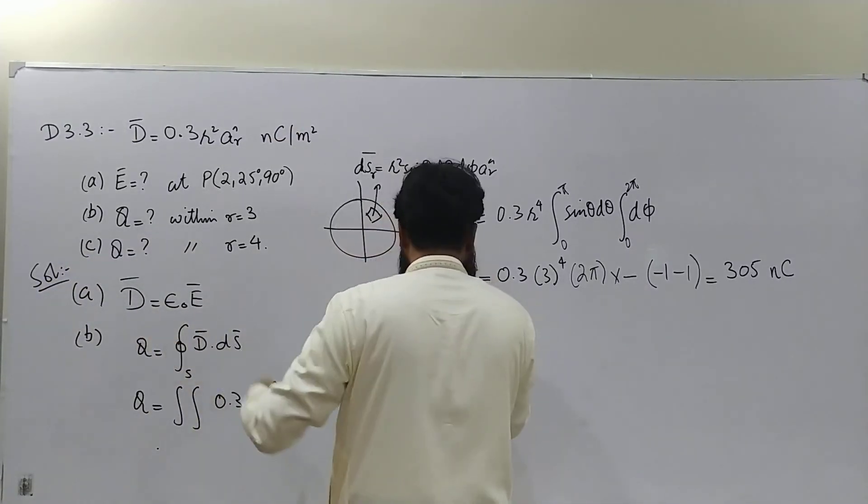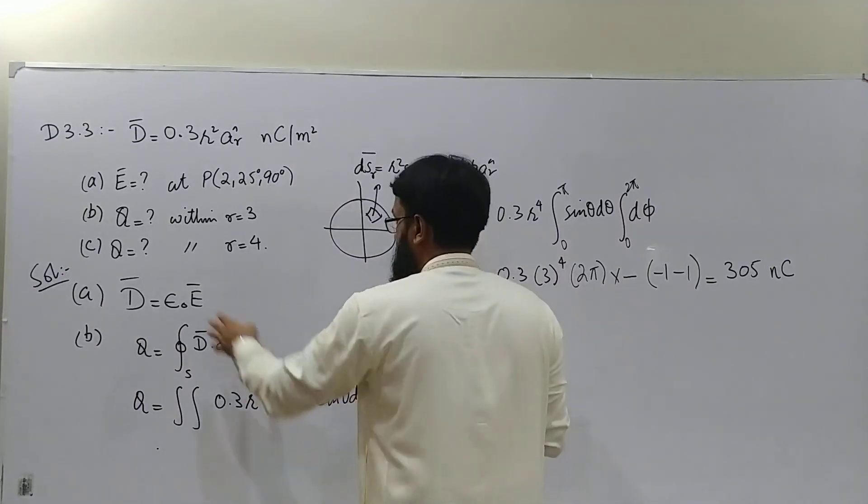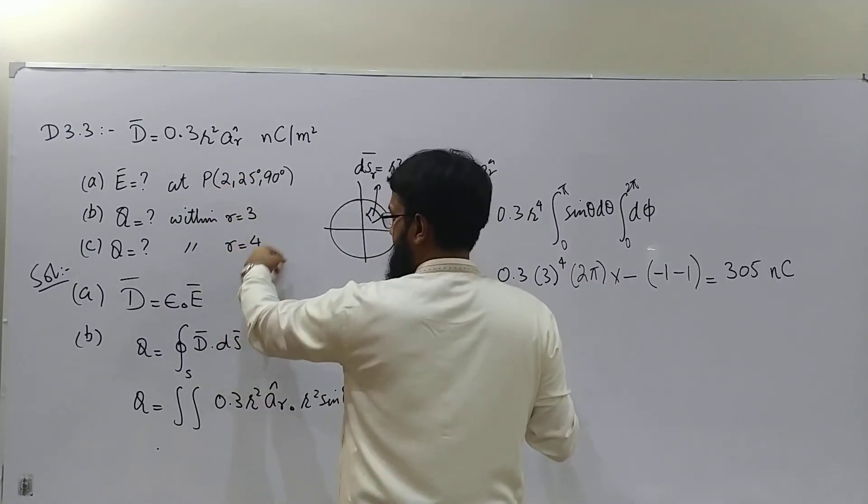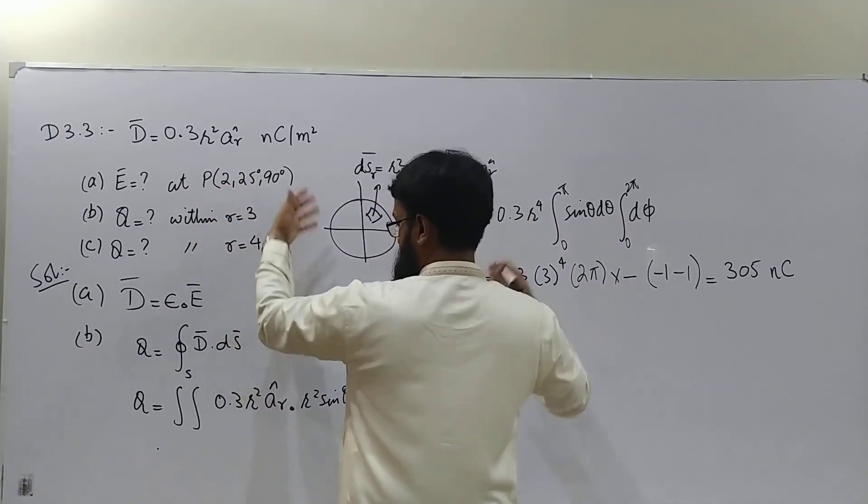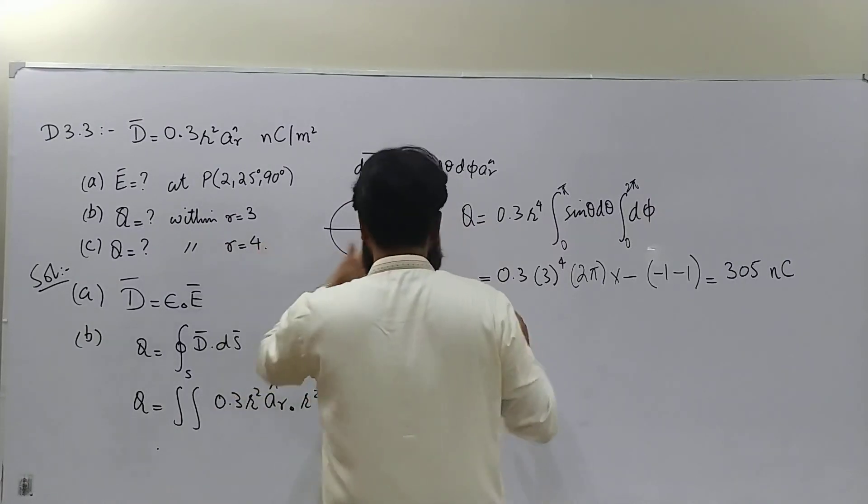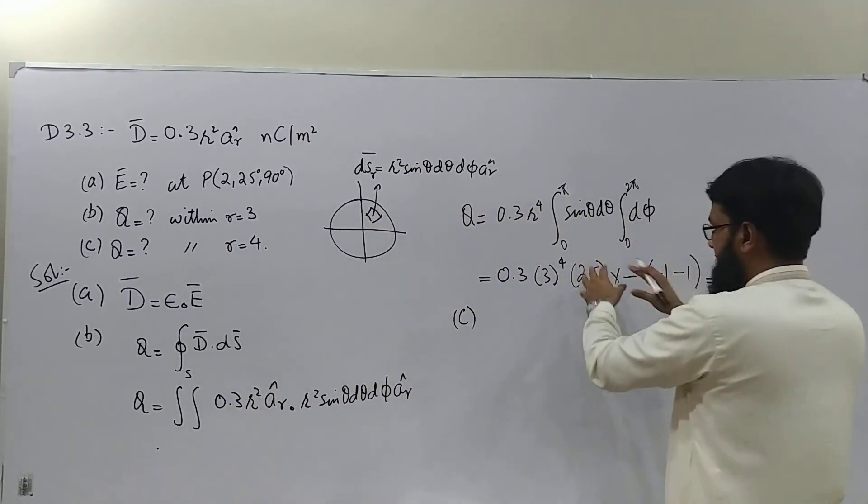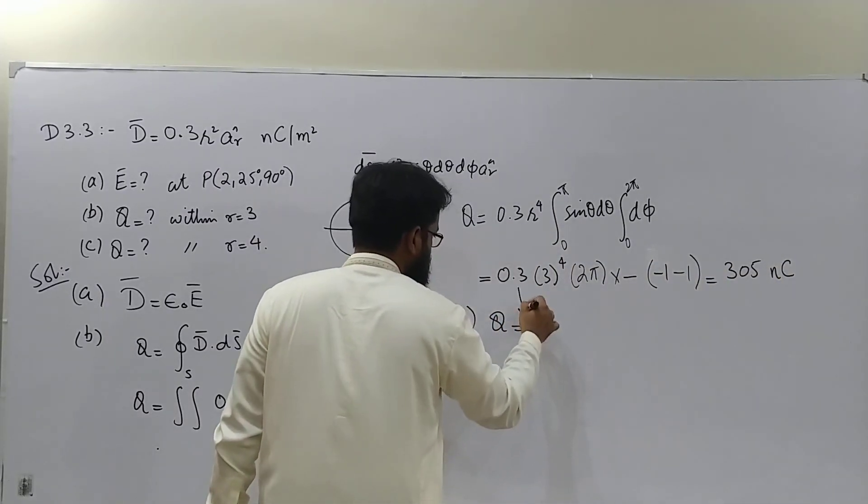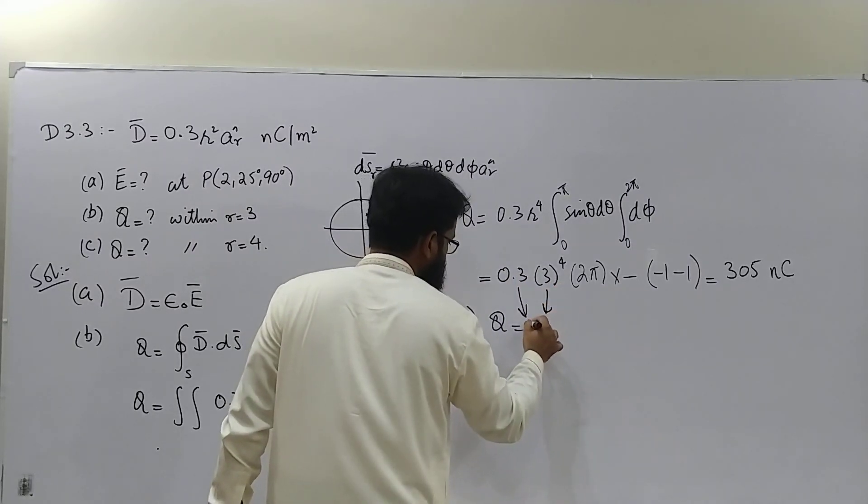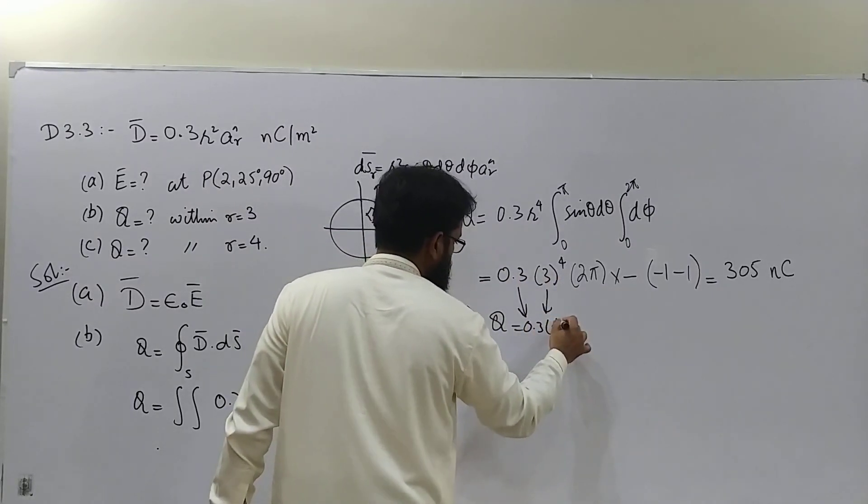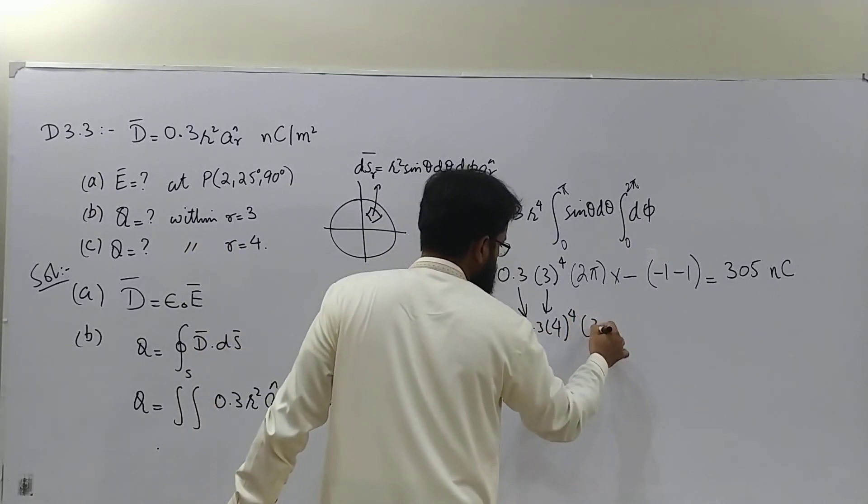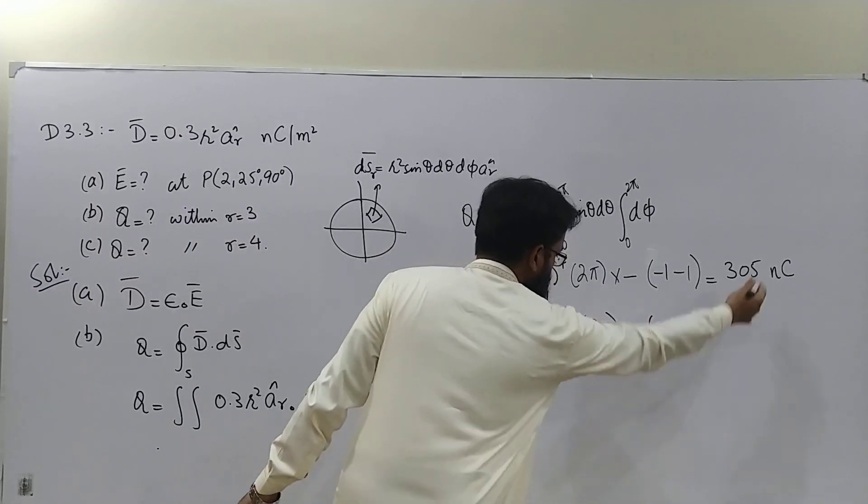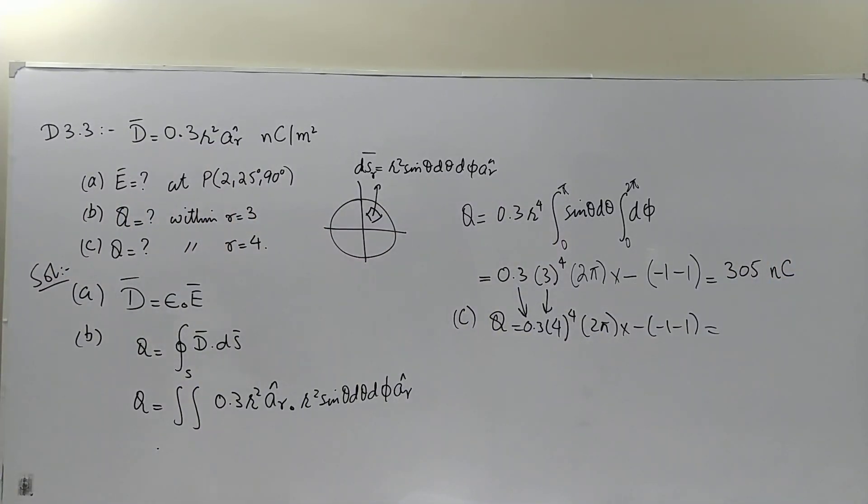This was for part B. Now for part C you have to find the amount of charge within a different sphere which is larger. The problem is essentially the same, so you will carry on in a similar manner. At the end, here you will have to write 4 because R is 4, and rest of the things will be the same.